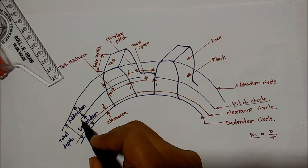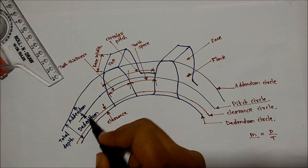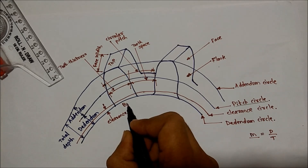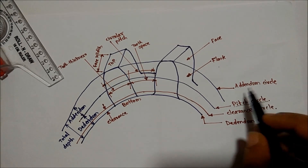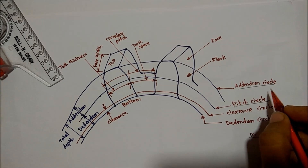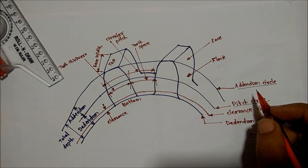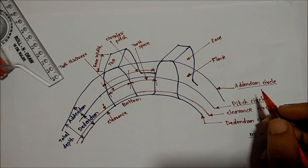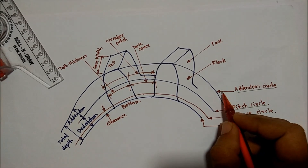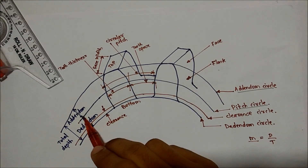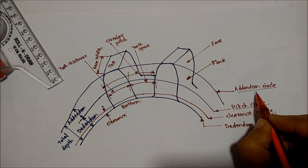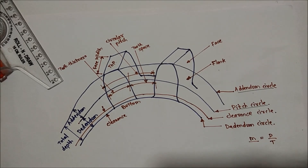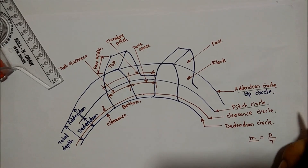Addendum is from the pitch circle to the top of the tooth; the bottom of the tooth is the dedendum. The addendum circle is a circle drawn through the top of the teeth and is concentric with the pitch circle. The addendum circle is also called the tip circle.